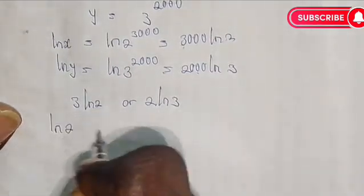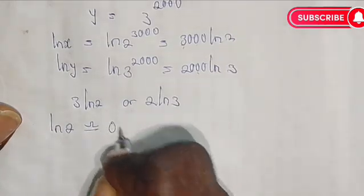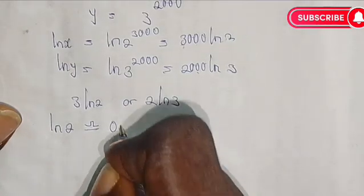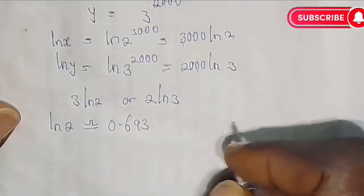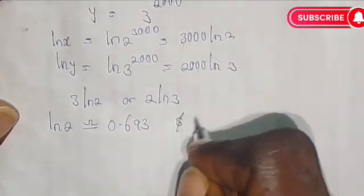From our logarithm table, the natural log of 2 is approximately 0.693.